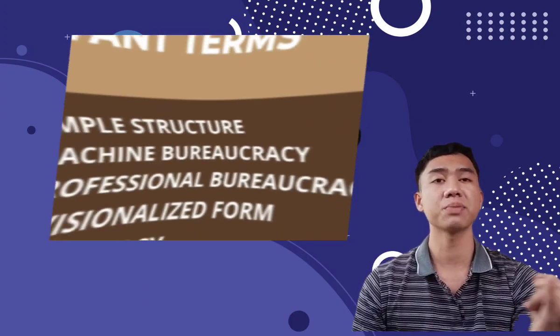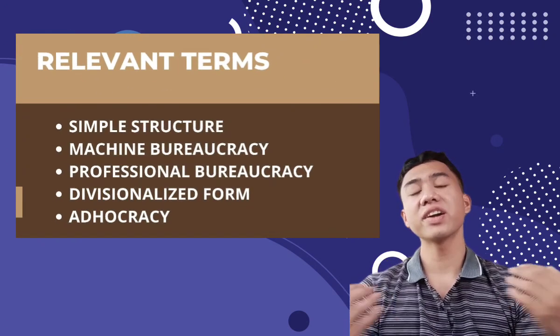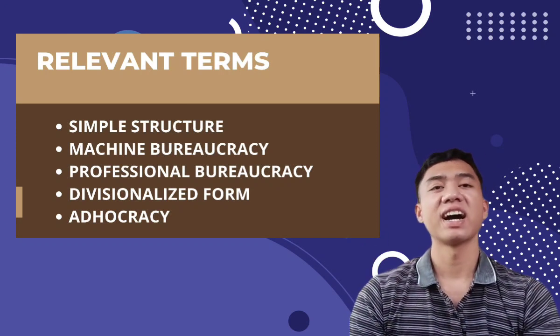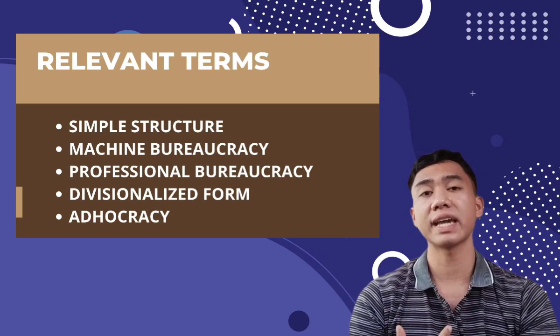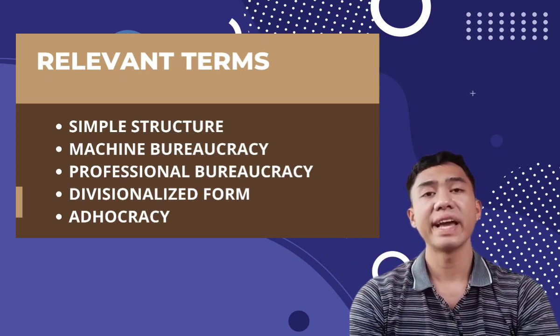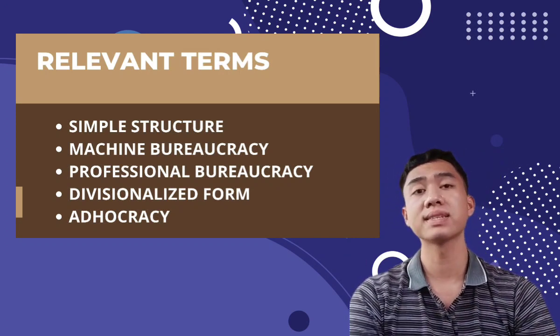Using the three basic dimensions, Mintzberg suggests five structural configurations. The simple structure has the strategic apex as its key part, uses direct supervision, and employs vertical and horizontal centralization. Examples of simple structures are relatively small corporations, new government departments, medium-sized retail stores, and small elementary school districts. The organization consists of the top manager and a few workers in the operative core, with no technostructure and a small support staff. Workers perform overlapping tasks.